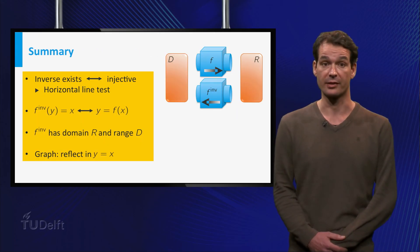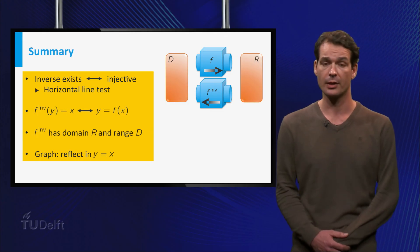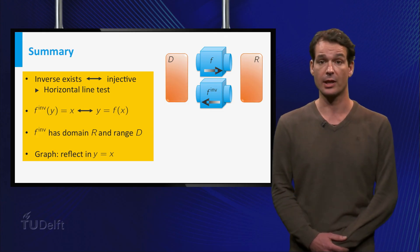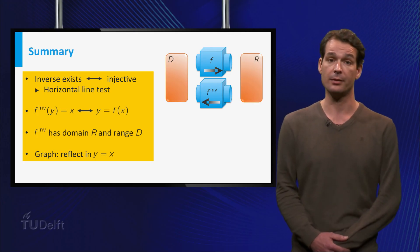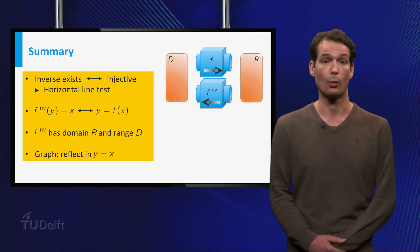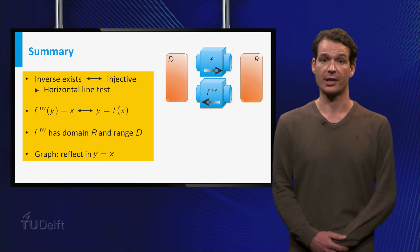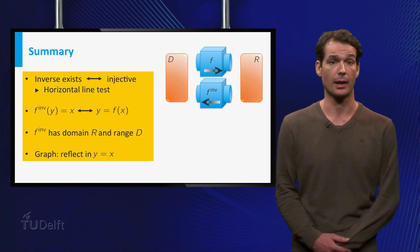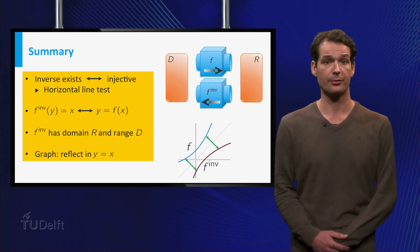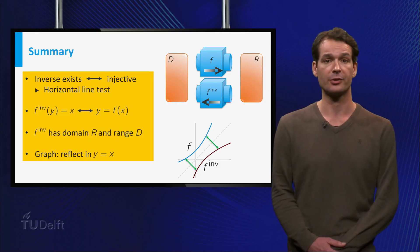Let's summarize. If F is a function with domain D and range R, then F only has an inverse if F is injective, which can be seen using the horizontal line test. If F has an inverse, then F inverse of Y equals X, precisely when Y equals F of X. F inverse has domain R and range D and the graph of F inverse is obtained from the graph of F by reflecting in the line Y equals X.